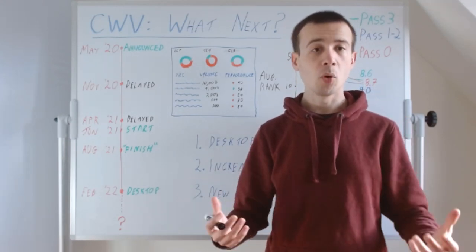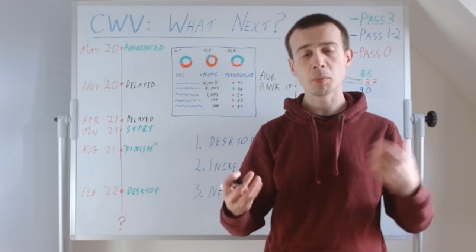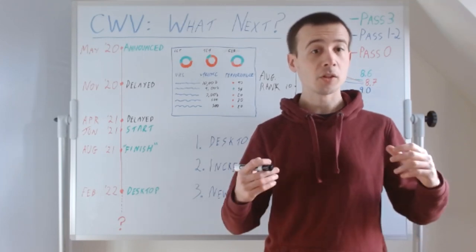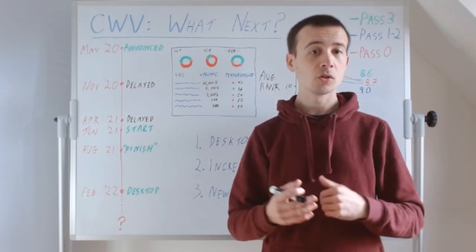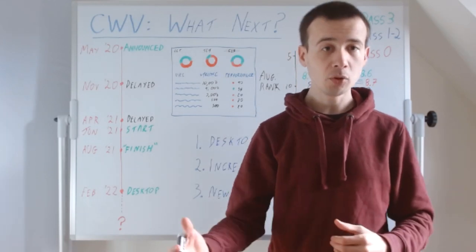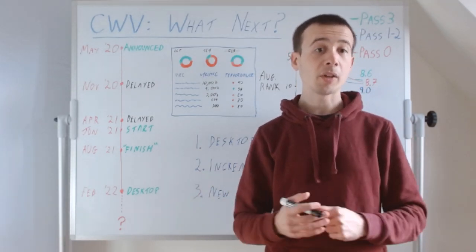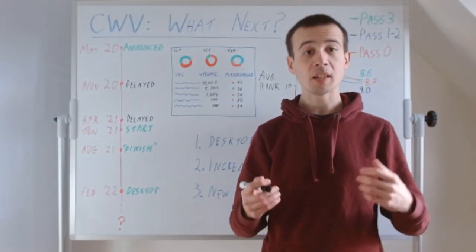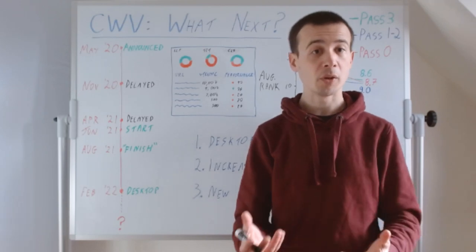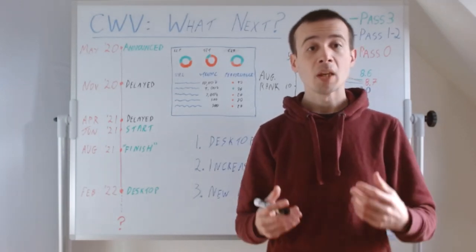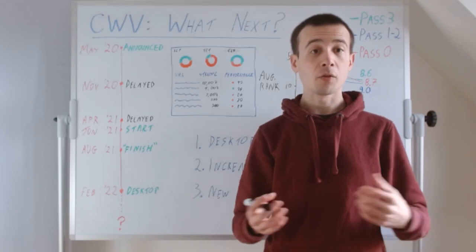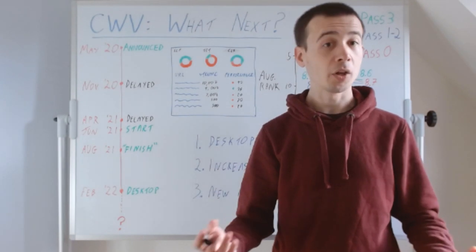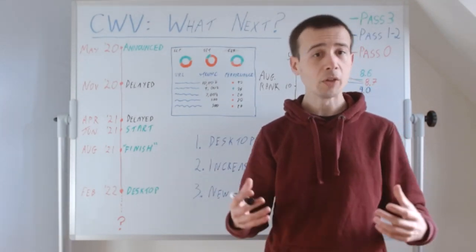And I think there's some important implications here because my theory is that the reason for the delays was that too few pages would have been getting a boost if they'd rolled out when they originally intended to. Partly because too few sites had actually improved their performance and partly because Google is getting data from Chrome, the Chrome user experience or Crux data, and it's from real users using Chrome and for a lot of pages for a long time, including now really, they didn't really have a good enough sample size to draw conclusions. The coverage is not incredible.